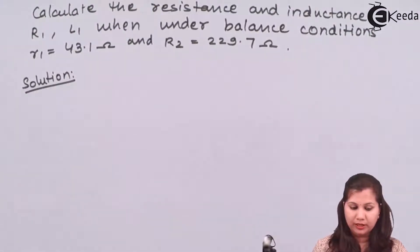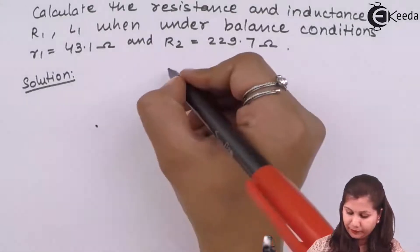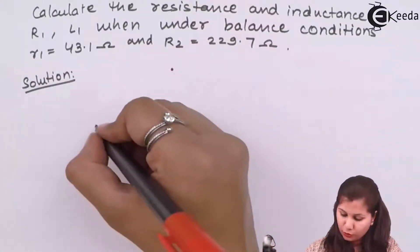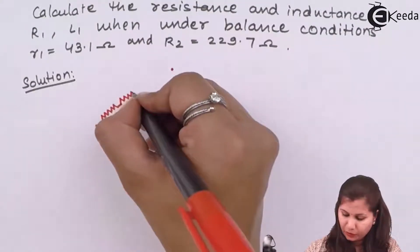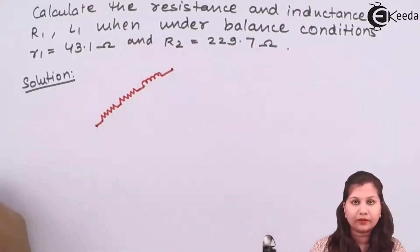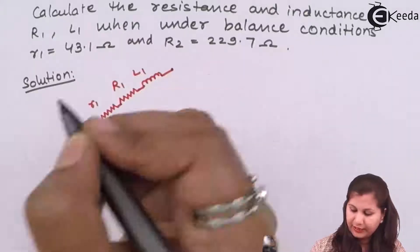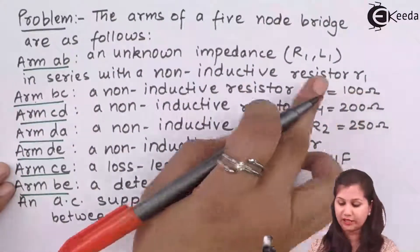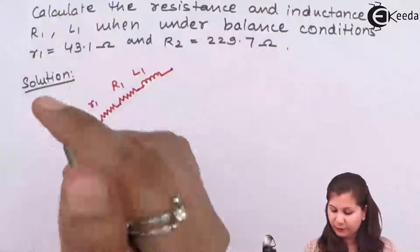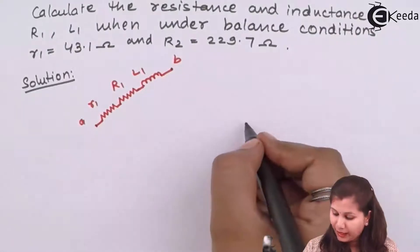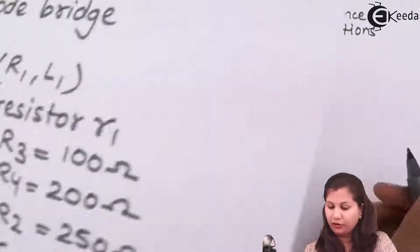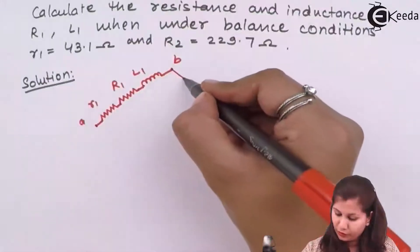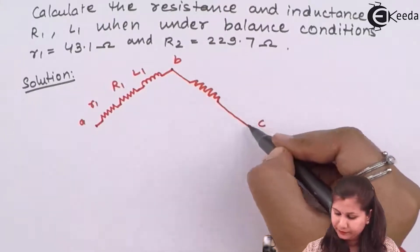Let us start with arm AB. Arm AB has the unknown impedance connected in series with the resistor — small r1, capital R1, and L1. It is given that arm AB has the unknown impedance along with the non-inductive resistor connected in series. Then arm BC is a non-inductive resistor R3.